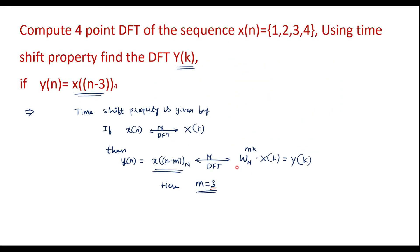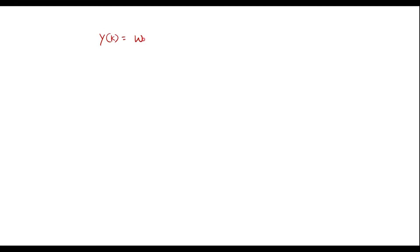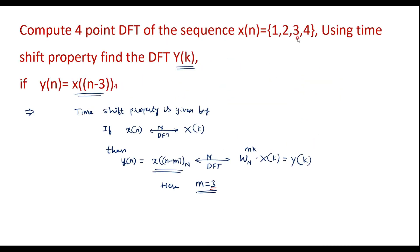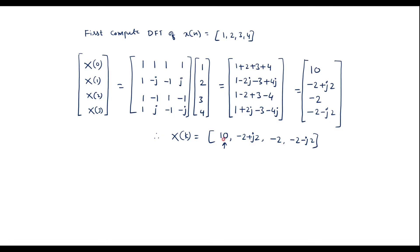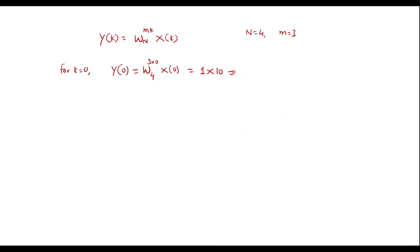Now calculate Y(k) directly using Y(k) = W_N^(mk) · X(k), where N=4 and m=3. For k=0: Y(0) = W_4^(3×0) · X(0) = W_4^0 · X(0) = 1 × 10 = 10.